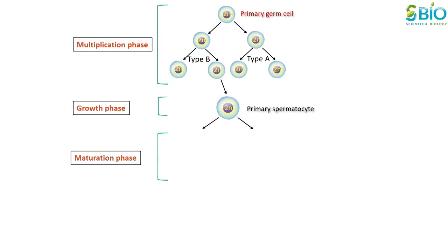The first maturation division is reductional and forms two haploid daughter cells called secondary spermatocytes. Both secondary spermatocytes then undergo a second maturation division by mitosis to produce four haploid spermatids. The process of formation of spermatids from spermatogonia mother cells is called spermatocytogenesis.